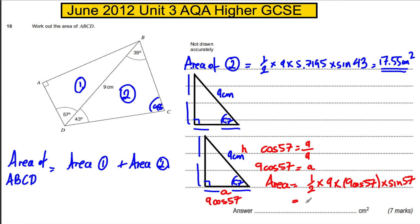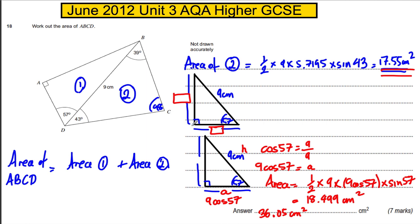I get 18.499 centimetres squared. I add that number and that number, and I get myself as my final answer 36.05 centimetres squared. The other way of doing it is to use SOHCAHTOA to find each side and do base times height over 2 — I will still get 18.499. So the answer is 36.05 centimetres squared for that 7 marker.